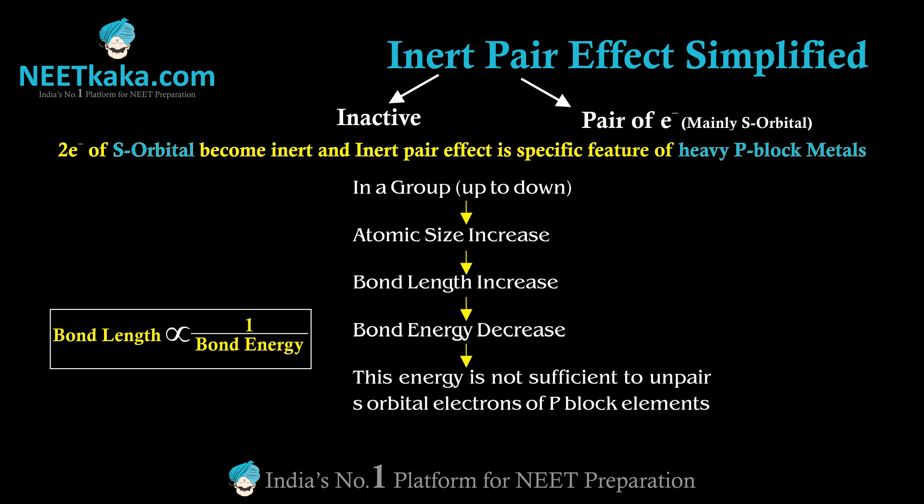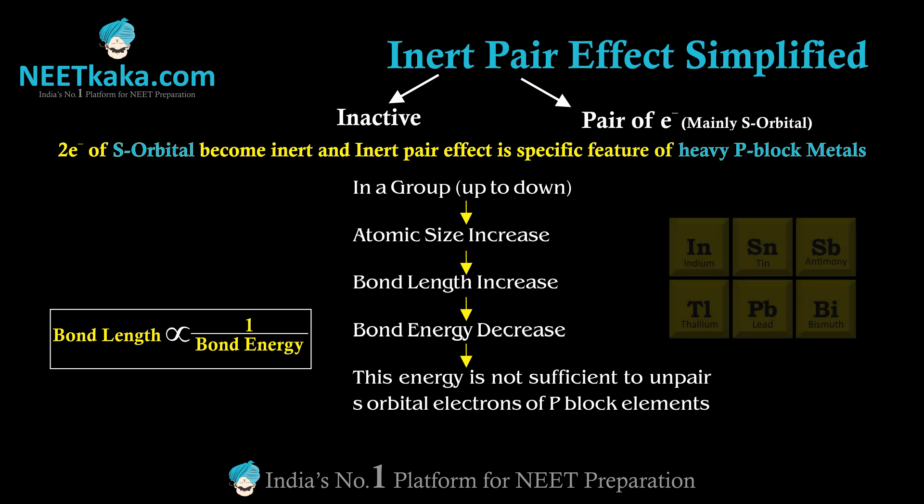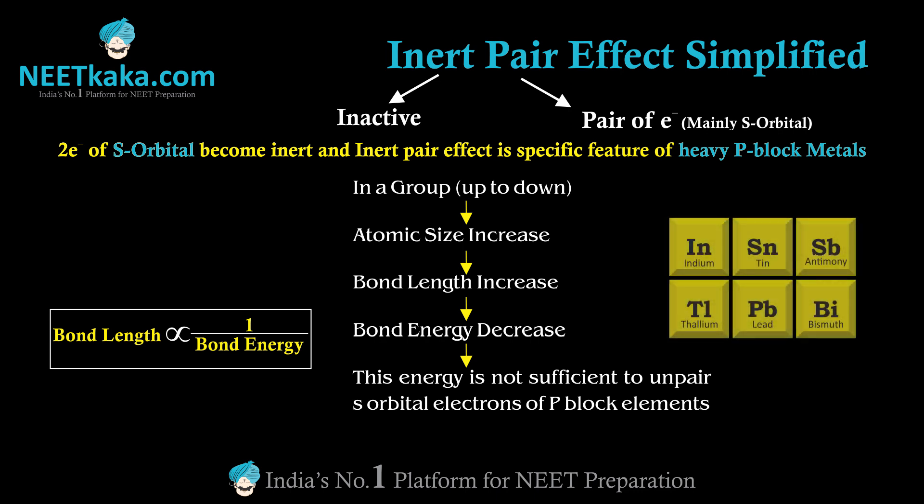This effect exists in large-sized p-block metals like indium, thallium, tin, lead, antimony, and bismuth. Due to the inert pair effect, their lower oxidation state is more stable than the higher oxidation state. In the higher oxidation state, these heavy p-block metals accept electrons and act as oxidizing agents.